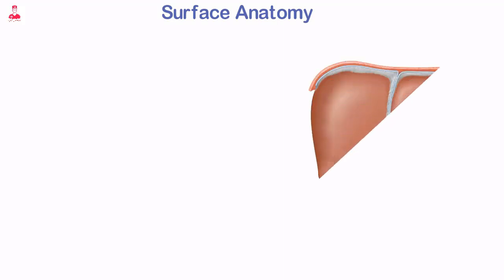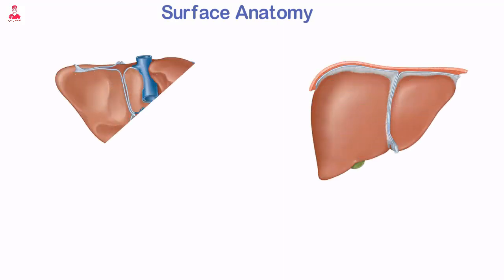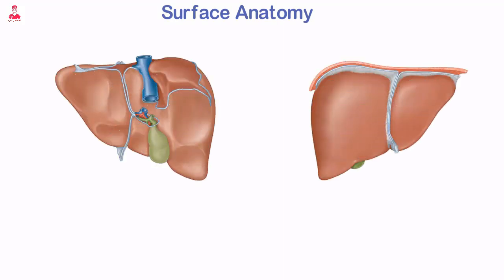The liver can be divided into lobes according to surface anatomy or into segments according to vascular supply. The four lobes commonly used for reference based on surface anatomy are the left, right, caudate, and quadrate.